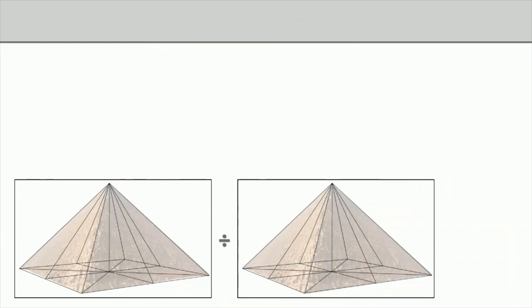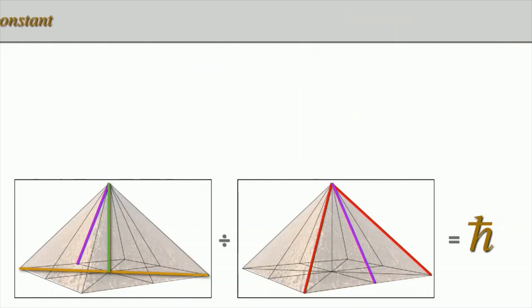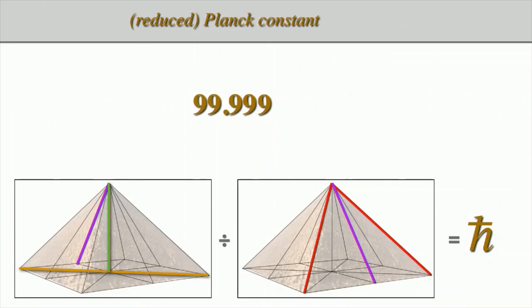What about the reduced Planck constant? That's this, which he mentioned, h-bar. Again, just that simple. A side slope and a height and a diagonal divided by two corner slopes and a side slope. It's called the reduced Planck constant. It's 99.99995% accurate.